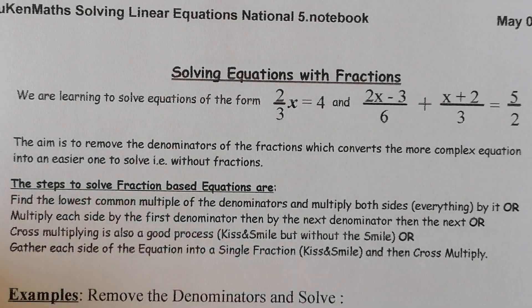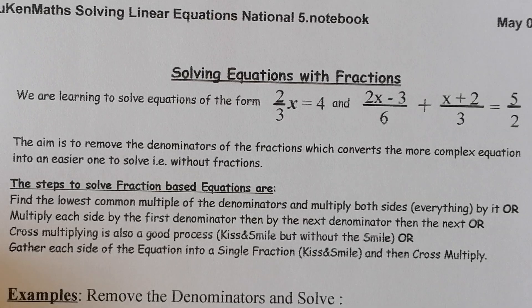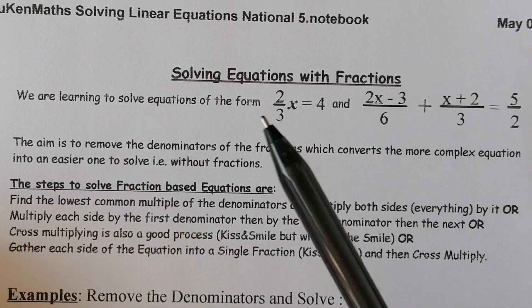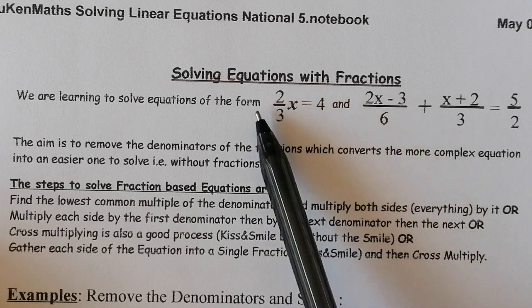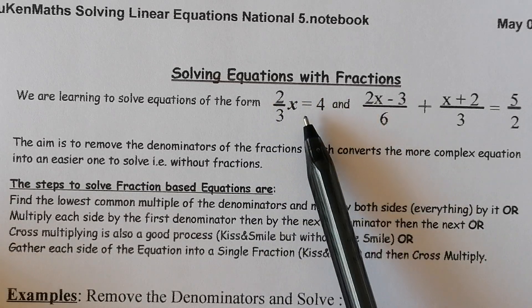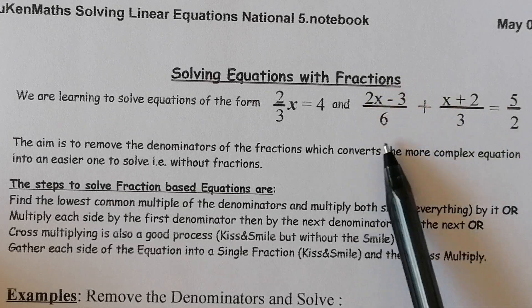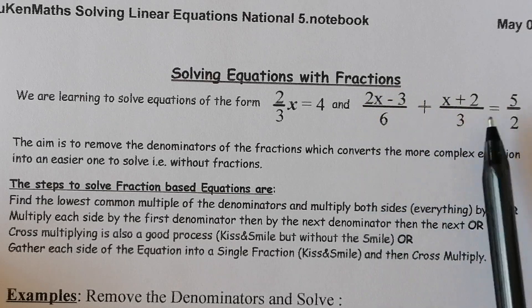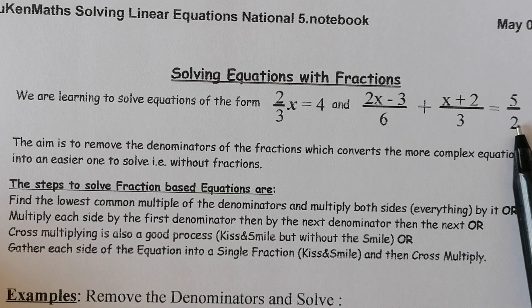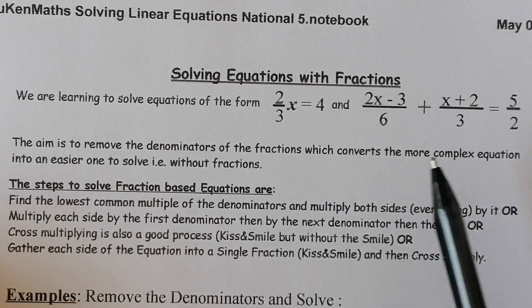This is the fourth video of solving linear equations. What we're doing today is looking at solving equations with fractions. The type of fractions we've got are either two-thirds x equals 4, which is relatively simple, compared to more complex ones with two separate fractions and a fraction on the other side of the equal sign as well. We're going to work through from this type of question through to that type.